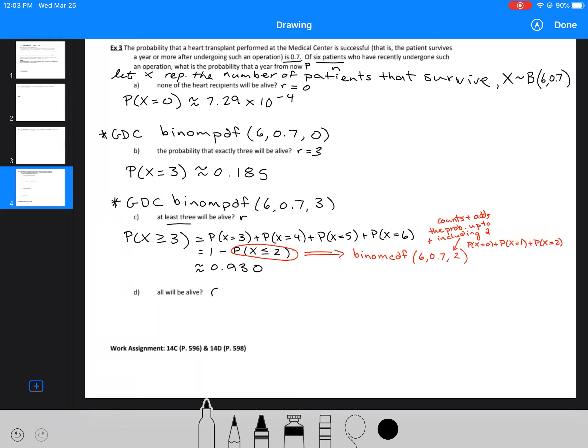The last one, we're looking for the probability that all of them are going to be alive. This is another example of binomial PDF. We're looking for R is equal to 6, so we've got the probability that X is equal to 6. Here we can use our GDC again, binomial PDF. We've got 6, 0.7, and then 6, and it should give you approximately 0.118. So again, don't include your calculator notation in your answer. It is something extra that you do. This is enough for your final answer.